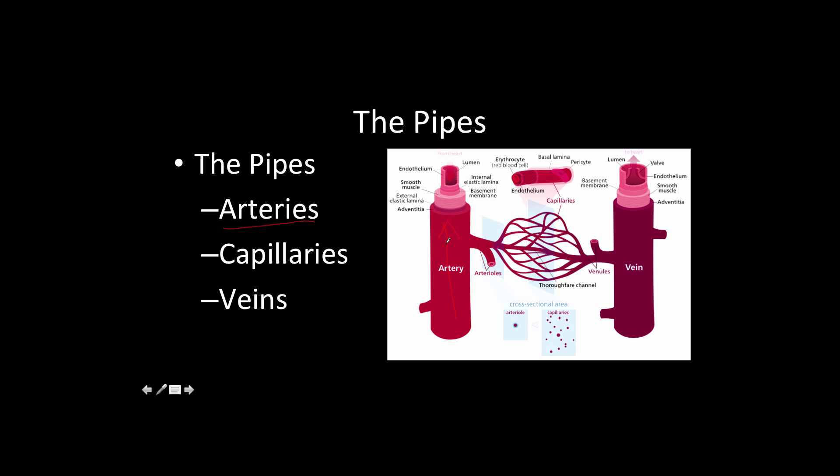When you push in on an artery, you feel a pulse. Arteries eventually get much smaller, become about one cell thick, and those are called capillaries, and that's where oxygen or carbon dioxide can enter or leave the blood.